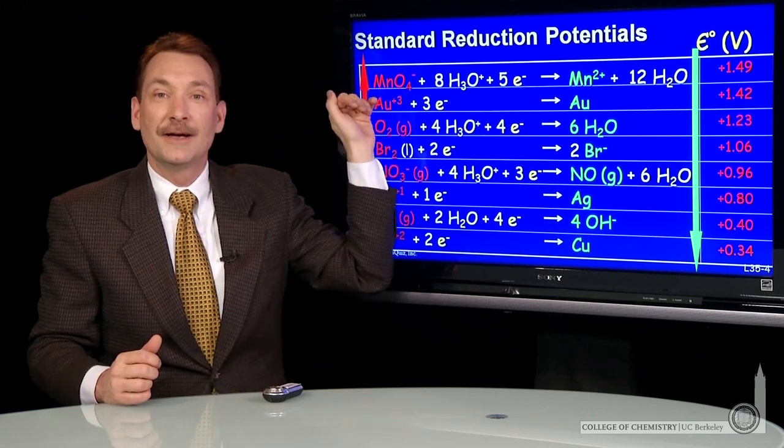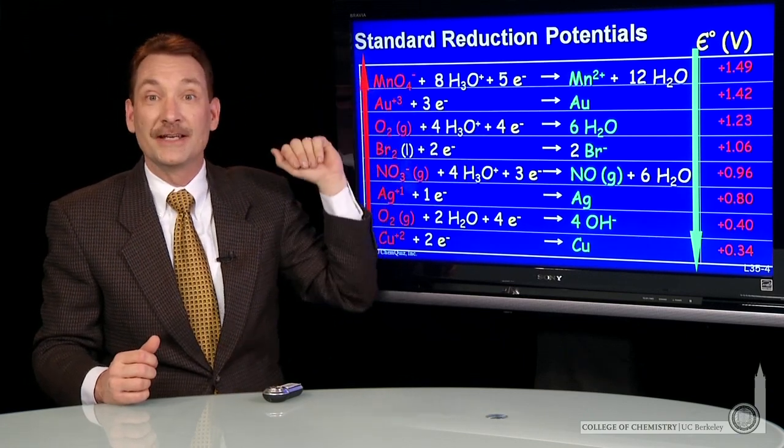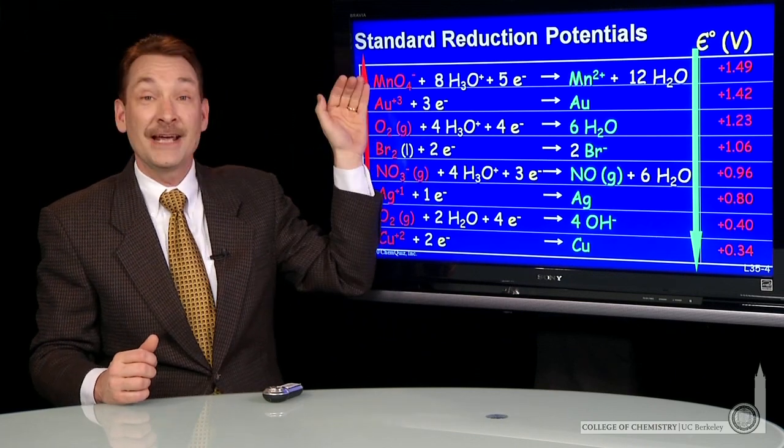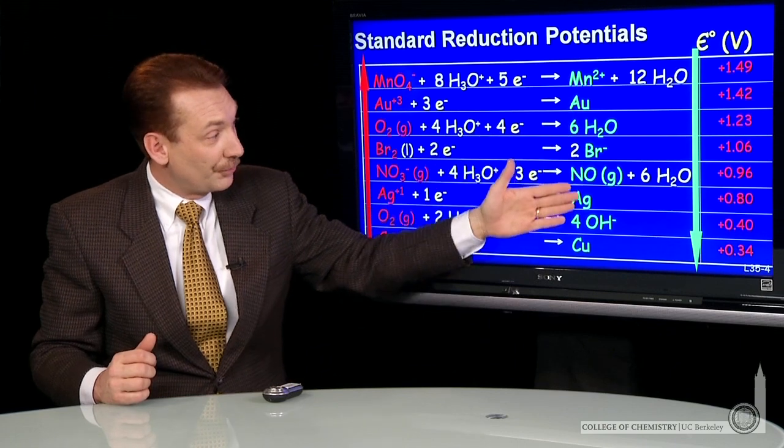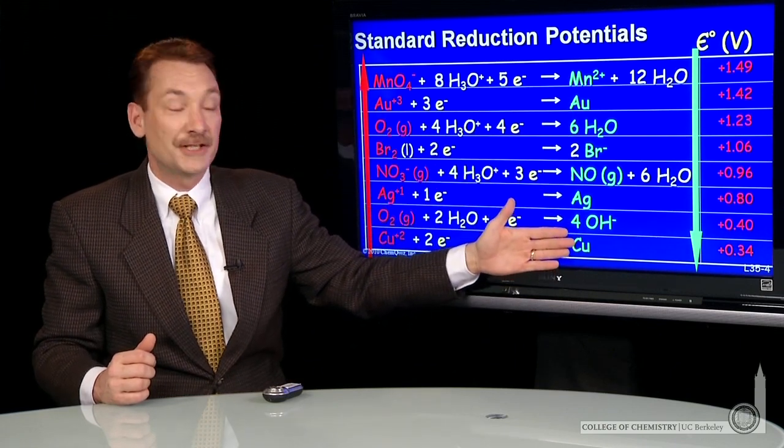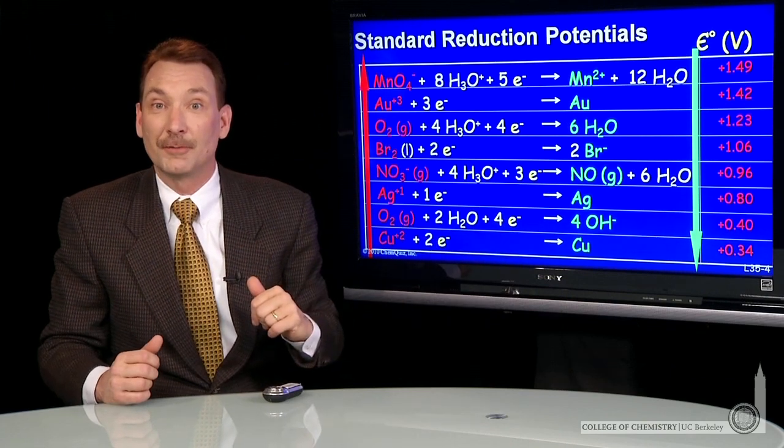So high reduction potential means you have a strong ability to oxidize. So the permanganate ion can oxidize any of the products here listed below. And in fact, all these products and the products in the lower half of our table as well.